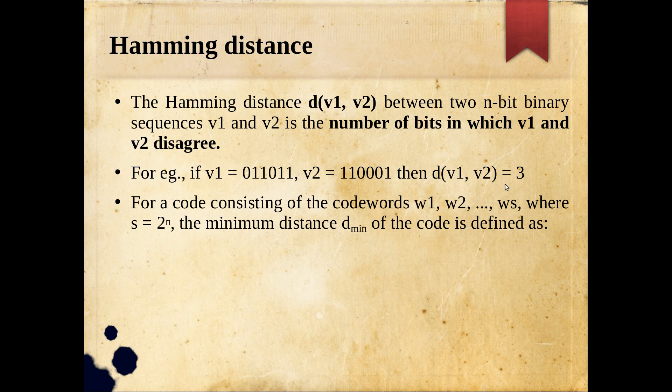For a code consisting of codewords w1, w2, ..., ws where s = 2^n (since each codeword is n bits), some of those 2^n codewords are valid for our mapping and the rest are invalid. The minimum Hamming distance — or simply minimum distance d_min — of the code as a whole is defined over all 2^n combinations. You compute the pairwise Hamming distance between all distinct codeword pairs and take the minimum.